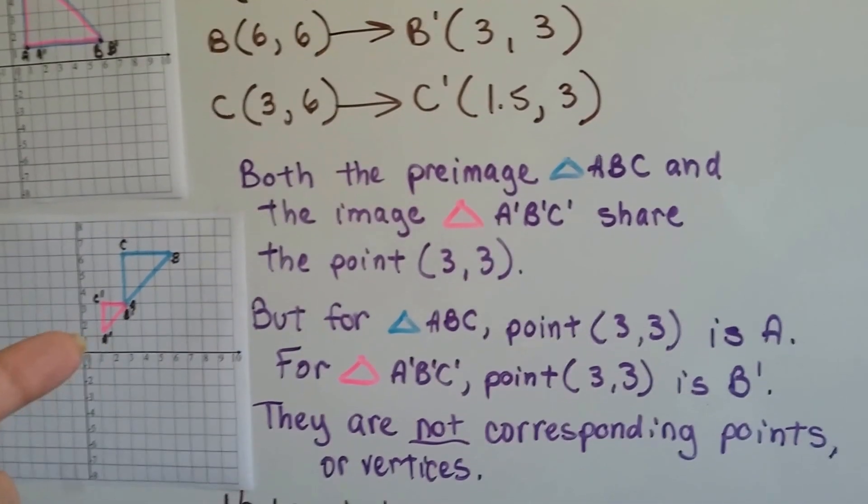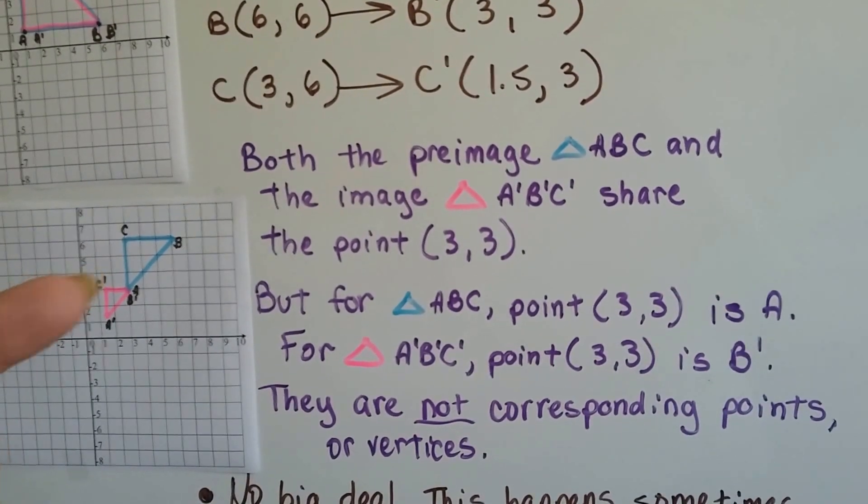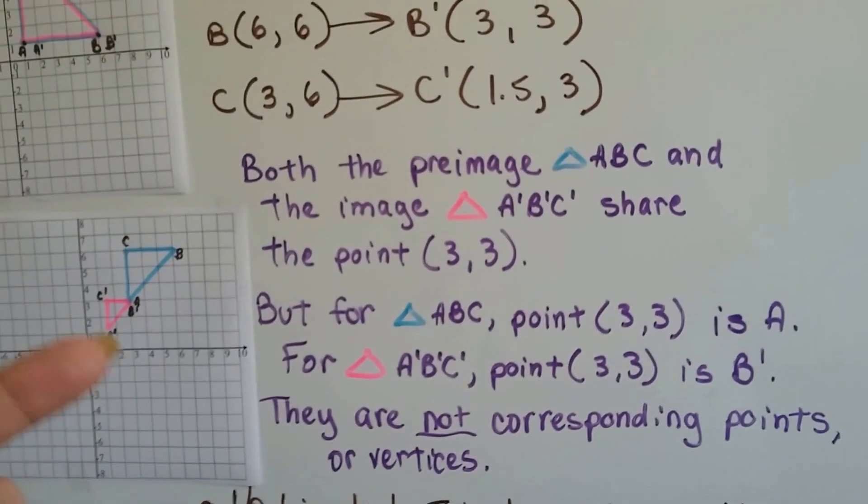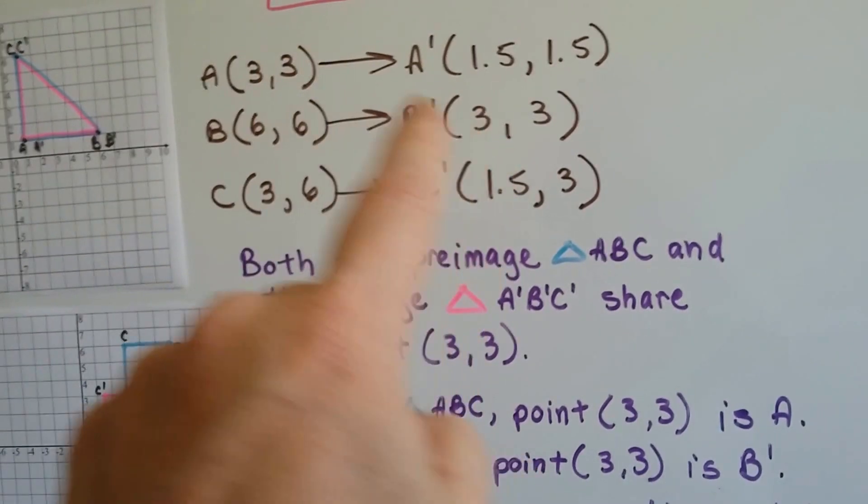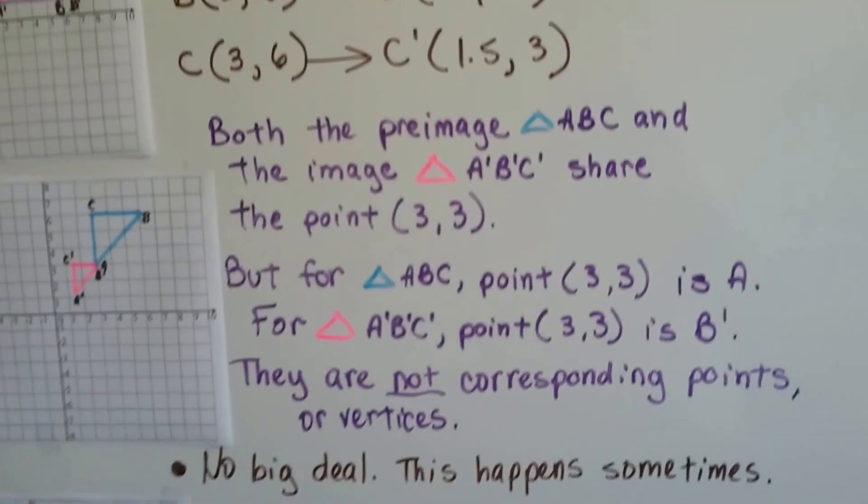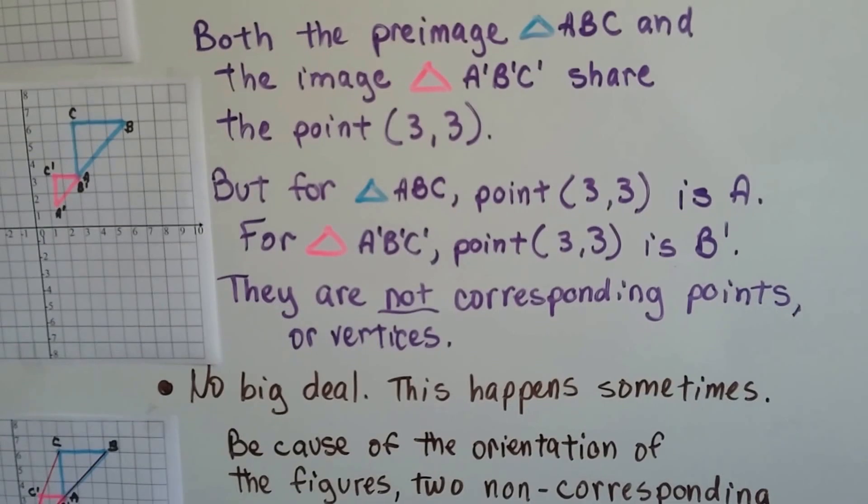Both the pre-image ABC and the image A'B'C' share that point (3,3). But they're not corresponding points or vertices.